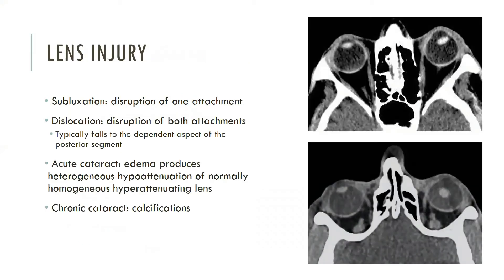Trauma-related deformation of the globe may cause partial or complete tearing of the zonular attachments of the lens, resulting in lens subluxation or dislocation. Disruption of a single attachment is termed subluxation, and disruption of both attachments is termed dislocation or luxation. A dislocated lens typically lies dependently within the vitreous humor of the posterior segment. CT can readily confirm this diagnosis, as well as evaluate for additional ocular injuries. Lens subluxation and dislocation may also be spontaneous, as seen in Marfan syndrome, Ehlers-Danlos syndrome, and homocystinuria. In the presence of bilateral lens dislocation without a history of trauma, a systemic etiology should be suspected. The top image demonstrates a left lens subluxation and the bottom image demonstrates a left lens dislocation.